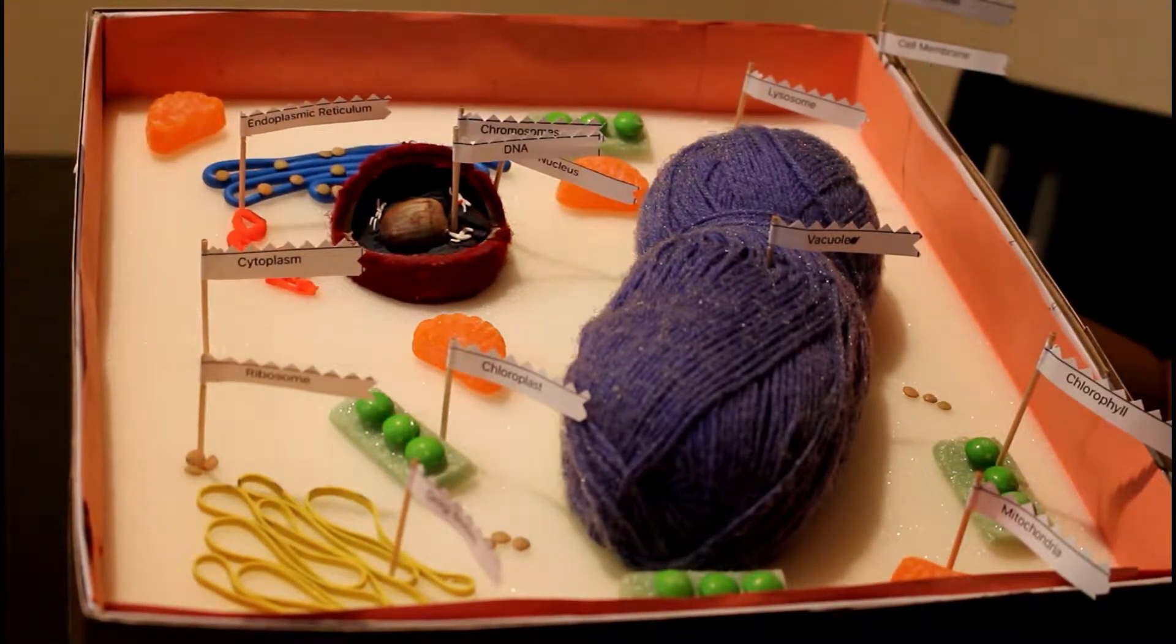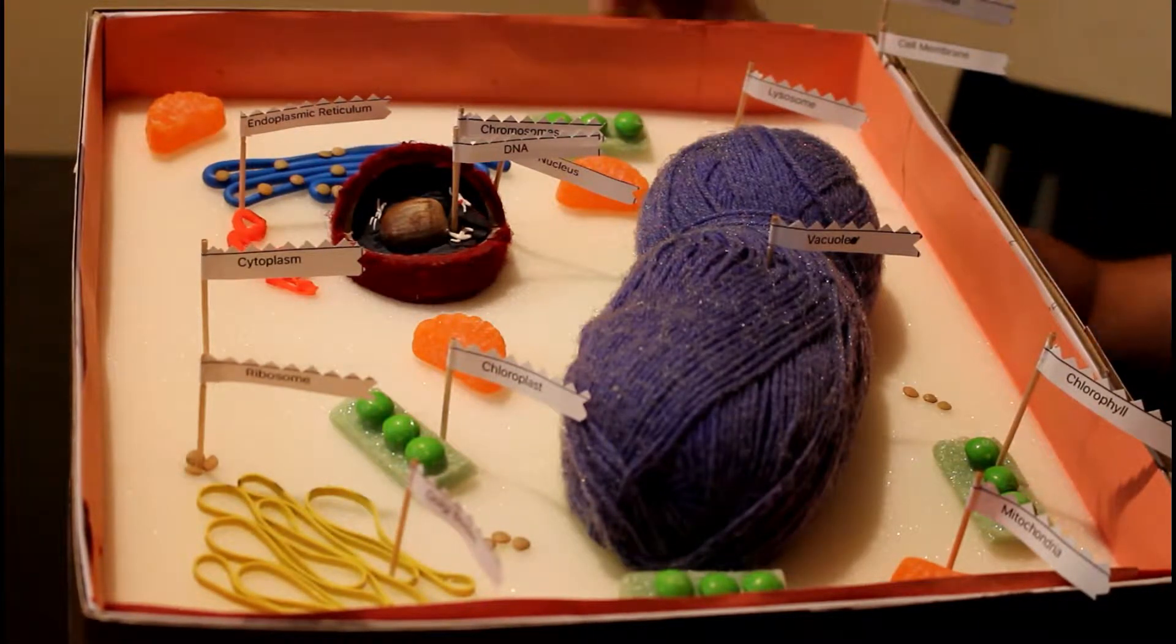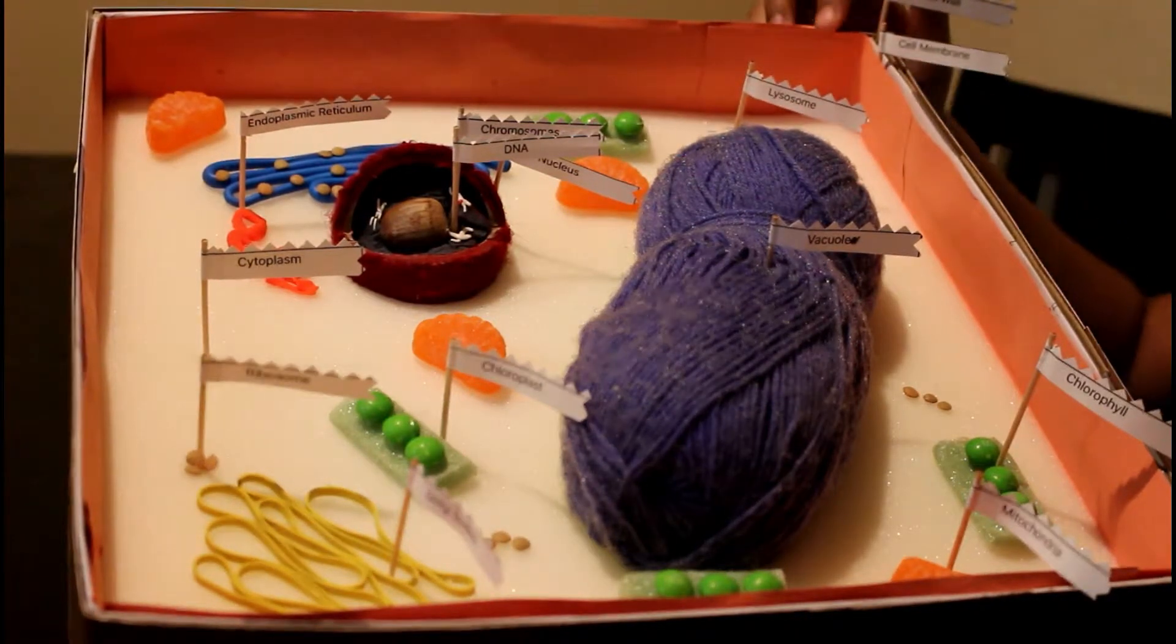That's one thing different about an animal cell and a plant cell. An animal cell doesn't have a cell wall, that's why it doesn't have a thick shape. Next to the cell wall is a cell membrane.